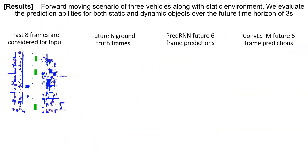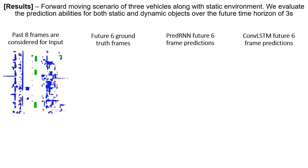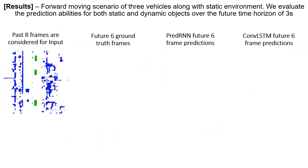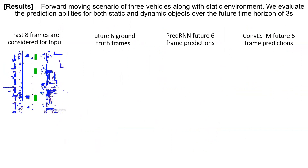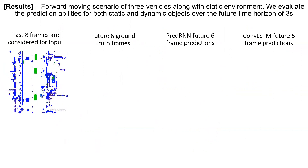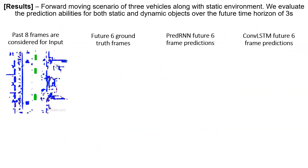One of the sample scenarios is shown wherein multiple vehicles are moving in the forward direction. We consider the past 8 frames as input to our networks.